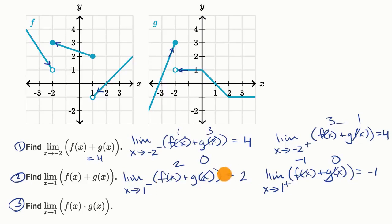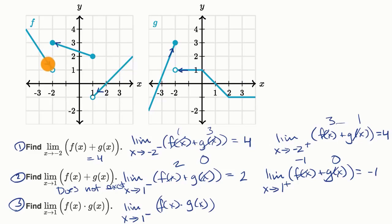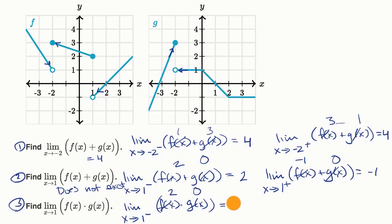The left and right-hand limits aren't approaching the same value, so this one does not exist. Now last but not least, the limit as x approaches one of f of x times g of x. The limit from the left-hand side: f of x is approaching two and g of x is approaching zero, so we're approaching two times zero, which is zero.